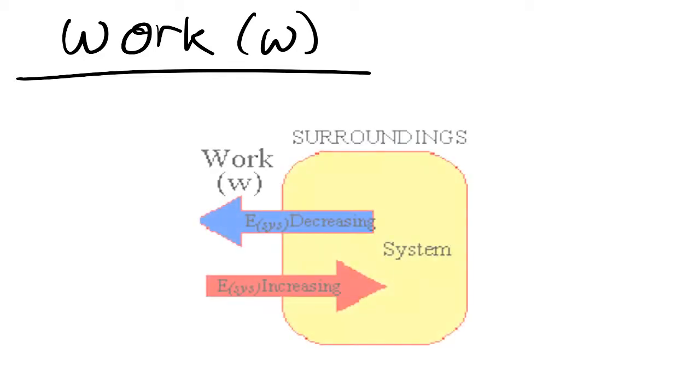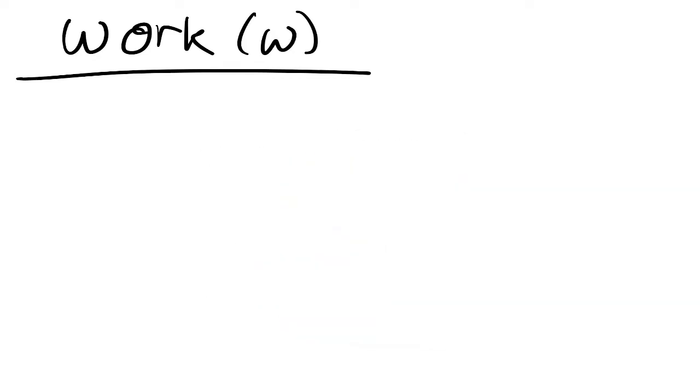Now let's consider the work done on or by the system. This work can be defined in more than one way. The way we're defining it is that it's work from the perspective of the system. Let's take, for example, the system as a box.